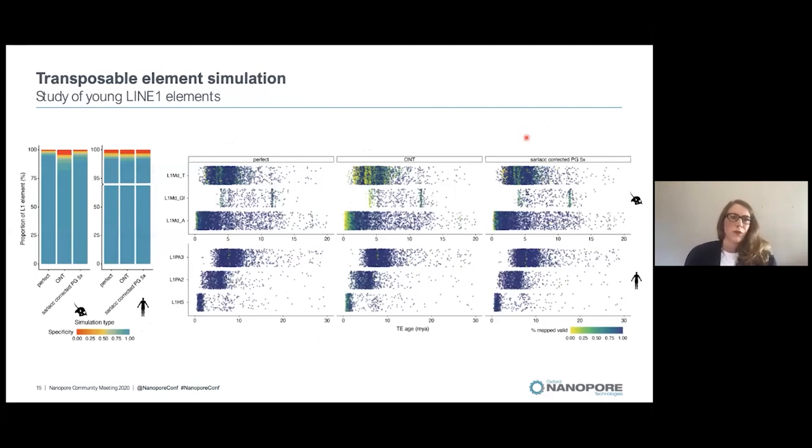In order to see what we can now map with the young LINE one elements, we also had a look at the specificity of mapping of young LINE ones. Here on the top, you can see the mouse genome. On the bottom, you can see the human genome. I told you before that for the human, we can nearly map all of the elements already. And you can see here the perfect identity score, the Nanopore identity score, where you can see that only a few of the very youngest elements cannot be mapped.